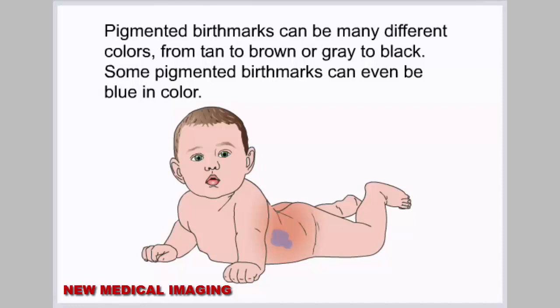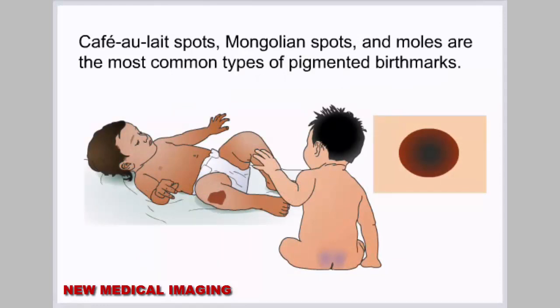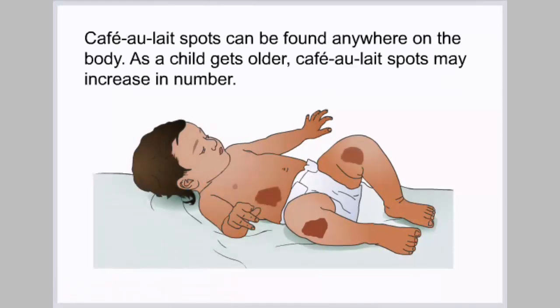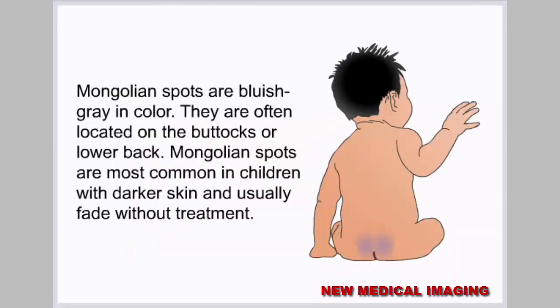Some pigmented birthmarks can even be blue in color. As a child gets older, cafe au lait spots may increase in number. Mongolian spots are bluish gray in color and are often located on the buttocks or lower back. They are most common in children with darker skin and usually fade without treatment.